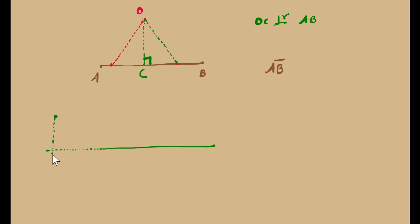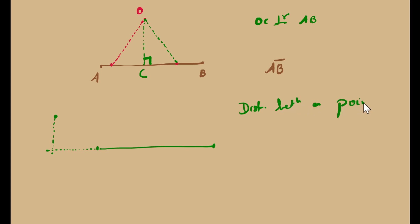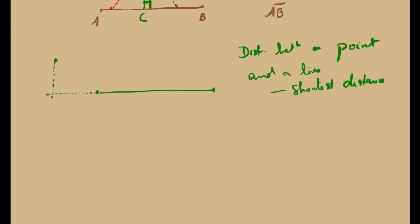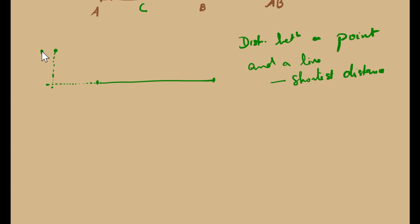Just drop a perpendicular from the point to the line. If the line falls short, just extend it — because it is after all a ray, it can be extended on both sides — and then measure the distance. This is the shortest distance, which happens to be the perpendicular. The perpendicular is the shortest distance to the line segment, and we are saying that this perpendicular distance is the shortest distance.